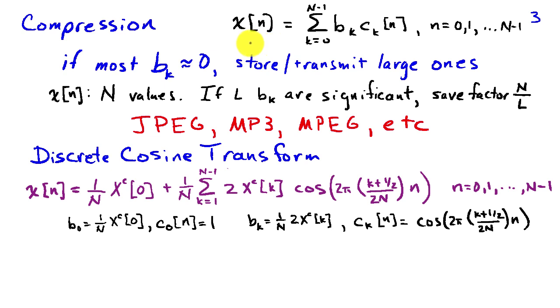So we can compare that to the expression at the top by noting that b0 is going to be 1 over n times xc of 0. So this is our coefficient associated with the c0 of n, which is exactly 1. And then for k greater than or equal to 1, we're going to have bk to be this weight that's out in front. So 1 over n times 2 times x superscript c of k. And our basis signals are these cosines whose frequency depends on k.